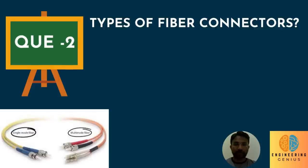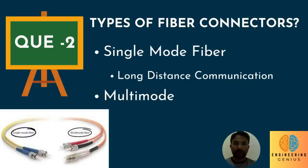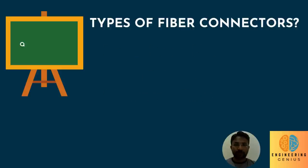Question 2: What are the types of fiber optics? There are two types of fiber optics cables. First is single mode, which is used for long distance communication, and the other type is multi mode, which is used for short distance communication.